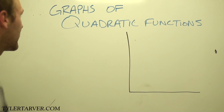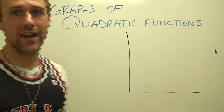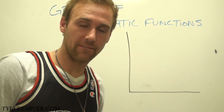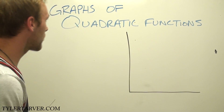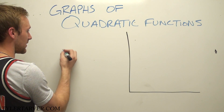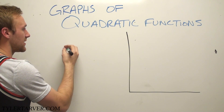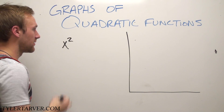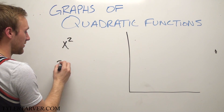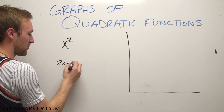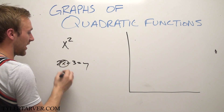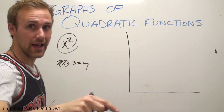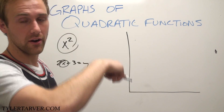Today we're going to learn about graphs of quadratic functions. A quadratic function means that it has an x squared in it. Usually you have something like 2x plus 3 equals y — that's just got an x in it. Quadratic means it's got an x squared.